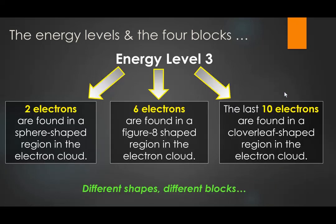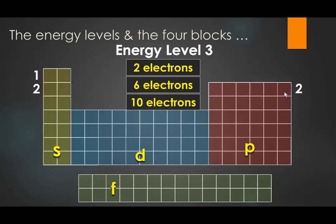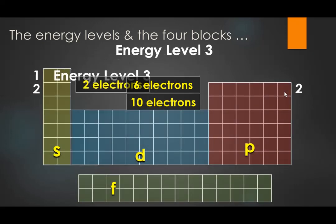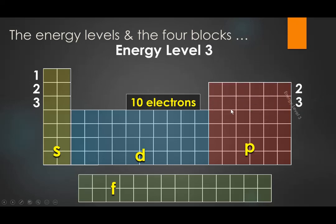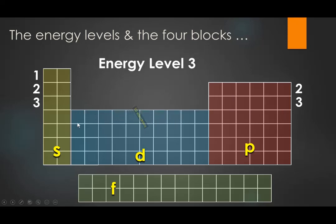Level 3 has 2 sphere electrons classified as 3S, 6 figure-8 electrons assigned to the 3P section, and 10 cloverleaf electrons assigned to the 3D region. Those 10 electrons move around cloverleaf-shaped paths. The first elements that have cloverleaf-shaped electron pathways are the elements in 3D, starting with scandium and moving across to zinc — the first 10 elements to have electrons moving in a cloverleaf-shaped way.